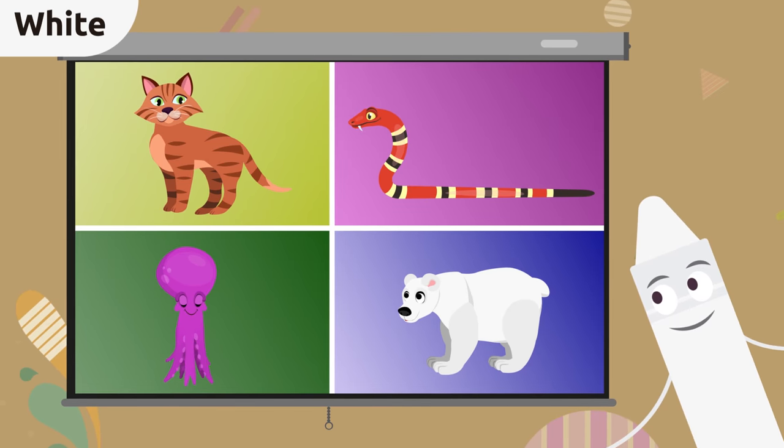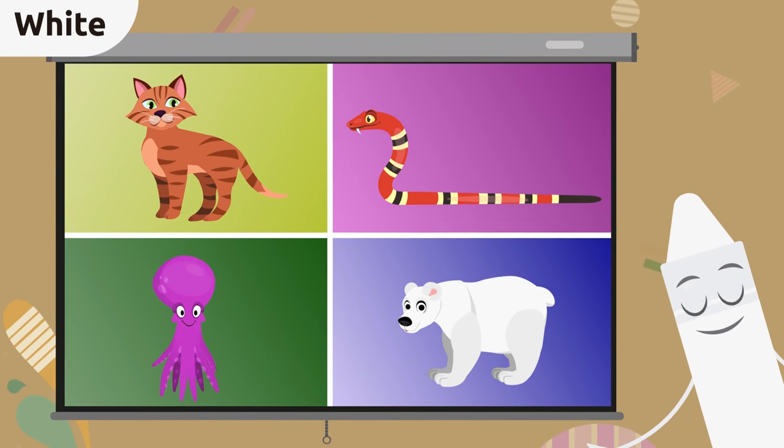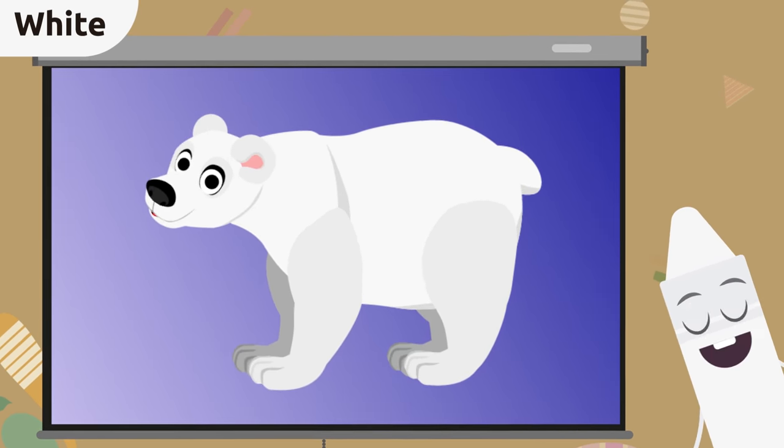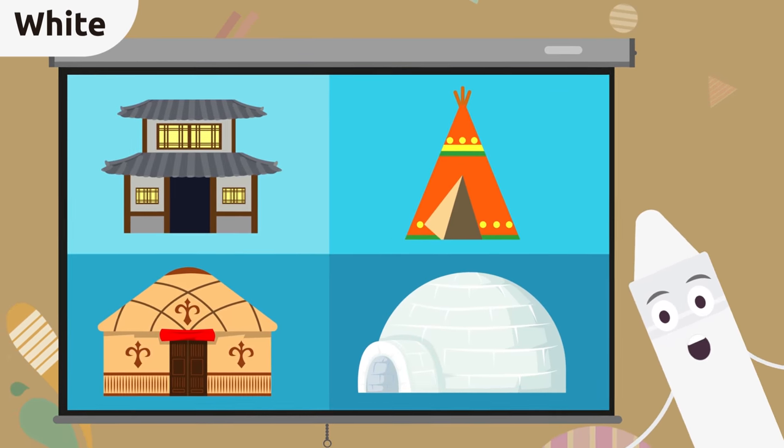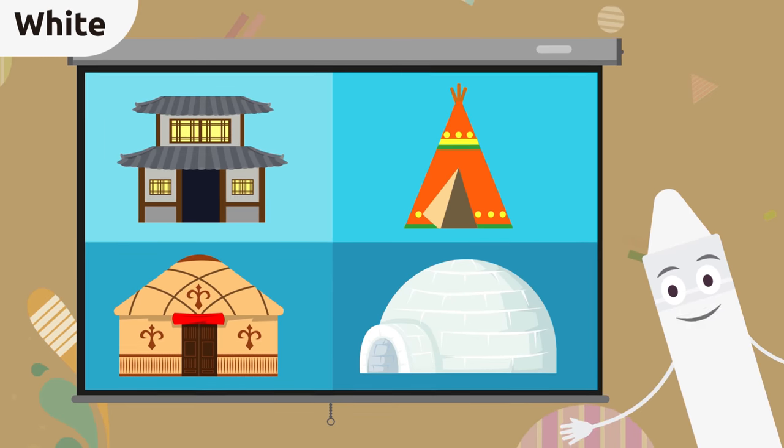Have you seen how many animals there are? Where's the white one? The polar bear. This polar bear is white. Look at all these different houses. Which is the white one?